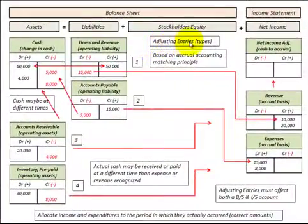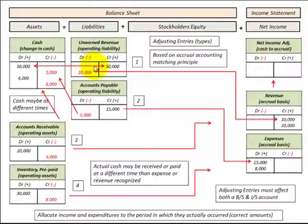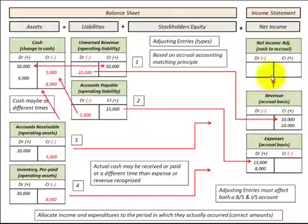Here we're going to look at adjusting entries. Adjusting entries are the adjustments that we have to make to our revenue and expense accounts on the balance sheet, such that we match the income and expenditures to the period in which they actually occurred and for the correct amount. That is based on accrual accounting. We then take those correct amounts for revenue and expenses and recognize them as revenue and expenses on our income statement.